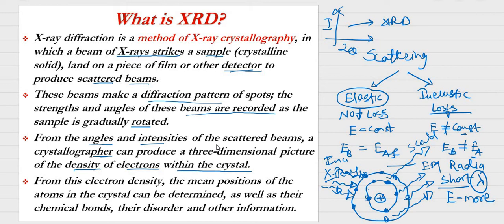Even though we say it is a periodic arrangement of atoms, we are actually tracking electron positions. From those electron positions we determine the mean position of atoms. From electron density, the mean position of atoms in a crystal can be determined, along with their chemical bonds, any disorder in the crystal, interatomic spacing, and other information.